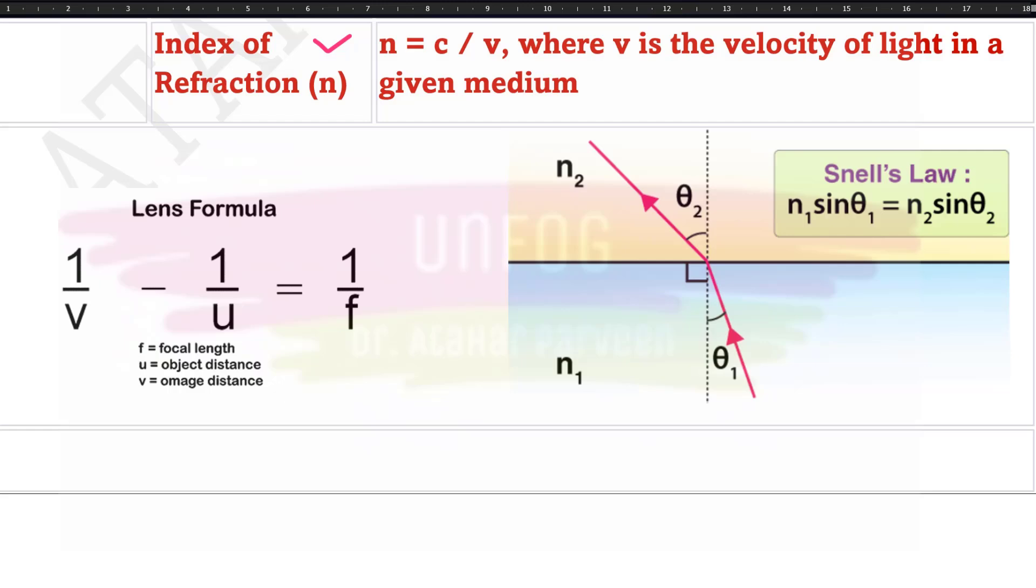Then we have this lens formula which says that 1 upon f is equal to 1 upon v minus 1 upon u where f is the focal length, u is the distance of the object and v is the image distance.